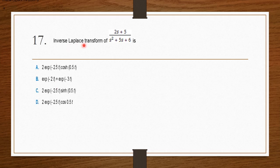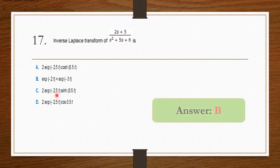The inverse Laplace transform of (2s + 5) / (s² + 5s + 6) — using partial fraction or power series expansion, we can find the inverse Laplace transform. Calculating that, the answer is option B: e^(−2t) + e^(−3t).